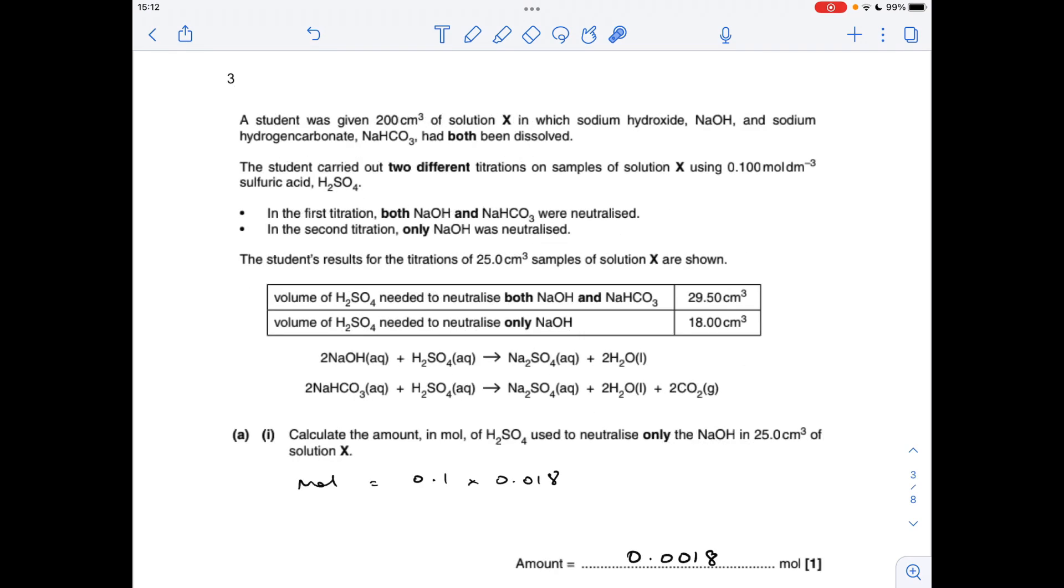Tricky question number three. The second part is, I think, but the first bit's fairly straightforward. The amount of moles of sulphuric acid needed to only neutralise the sodium hydroxide. You can see this volume here is just neutralising the sodium hydroxide, so it's just concentration times volume: 0.0018 moles of sulphuric acid.